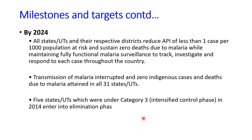By 2024, all states and union territories and their respective districts are expected to reduce annual parasite incidence to less than one case per thousand population at risk and sustain zero deaths due to malaria, while maintaining fully efficient malaria surveillance to protect, investigate, and respond to each case throughout the country.